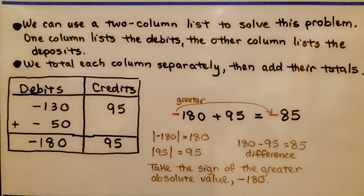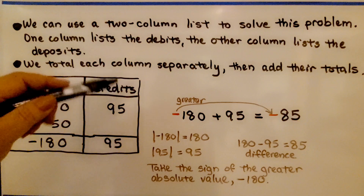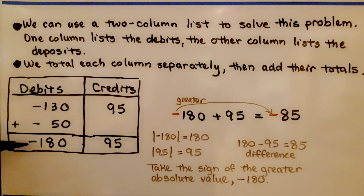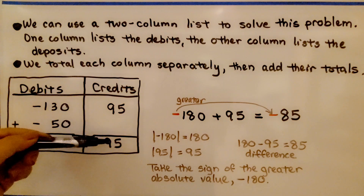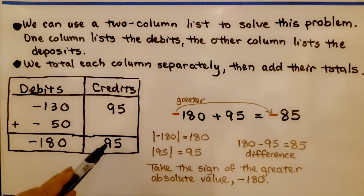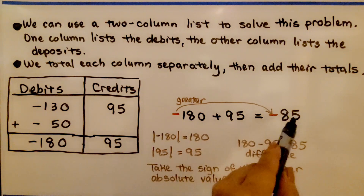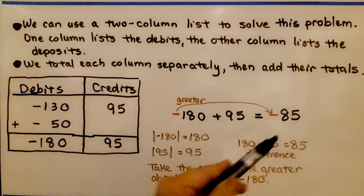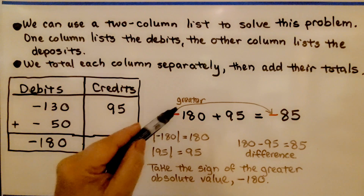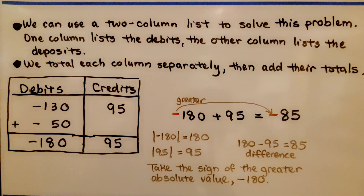We can also use a two-column list to solve this problem. One column lists the debits, the other lists the deposits or credits, and we total each column separately, then add their totals. For the debits: negative 130 plus negative 50 equals negative 180. There is only one credit of $95. Adding negative 180 plus 95: the difference between their absolute values is 85, and taking the sign of the greater absolute value gives us negative 85.